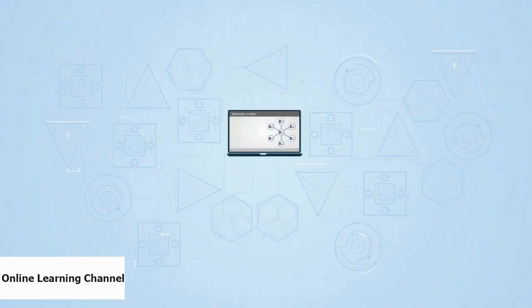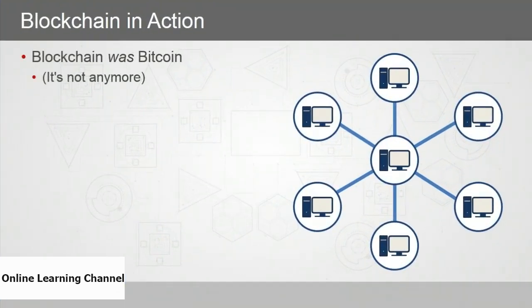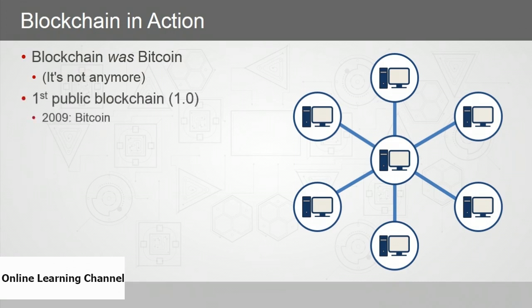Blockchain used to be Bitcoin — sort of. Until 2008, blockchain was merely a concept, but then Satoshi Nakamoto published a white paper and created the Bitcoin blockchain — the first public blockchain, version 1.0. Bitcoin is certainly owed credit for being the reason blockchain was implemented, and for the next several years blockchain and Bitcoin were effectively synonymous.